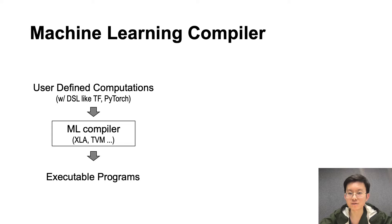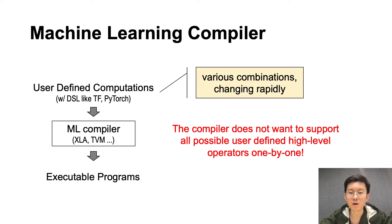Machine learning compilers are developing rapidly in recent years. They help to translate user-defined computations with domain-specific language frameworks like TensorFlow and PyTorch to executable programs on hardware. A compiler does not want to deal with all possible user-defined high-level operators one by one, because it is not feasible to enumerate all possible high-level operators by the engineers.